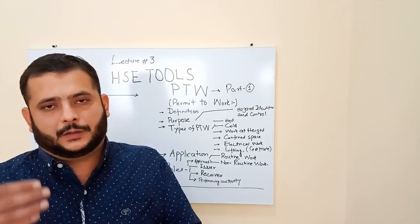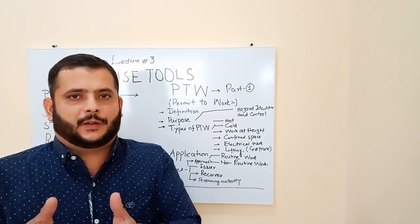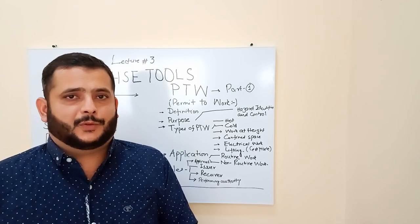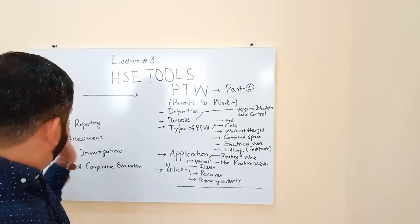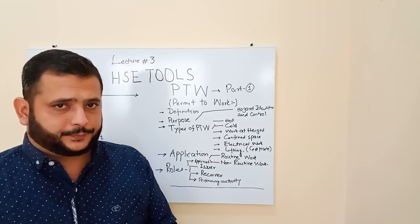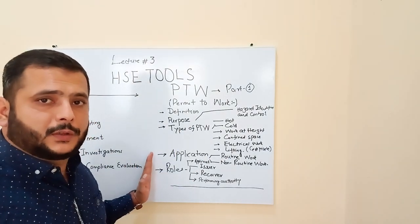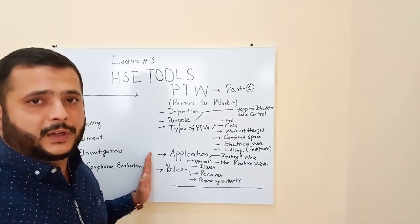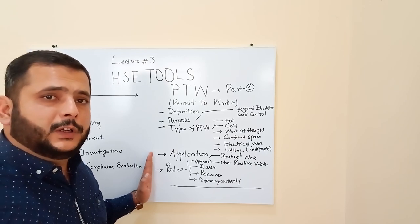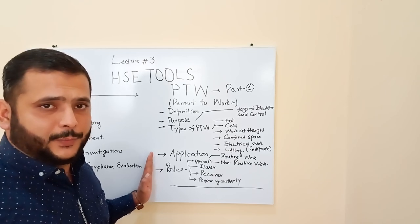JSA will be discussed in the next lecture. But first you need to understand the basic tool — the Permit to Work system: what is the permit, why it is required, where it is applied, when it is applied, and who needs to know what type of permit is required and what type of job is associated with that permit.